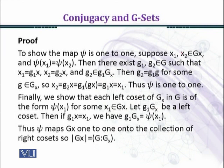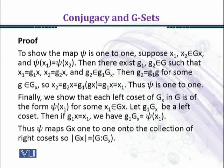Now we shall start the remaining part of the proof. In the previous module we have seen that psi, which is the map from the orbit of G_x to the left cosets of the stabilizer G_x, which is a subgroup of G, is the map to the left cosets of G. We have shown that psi is well defined. Now we will show that it is bijective.